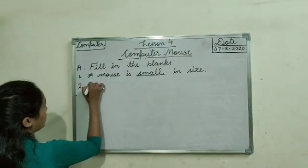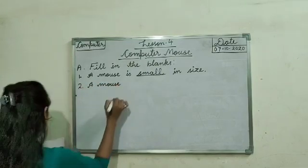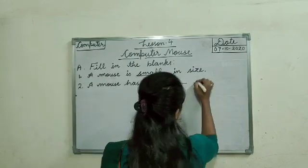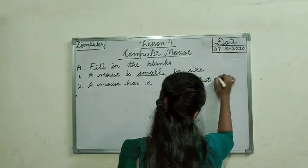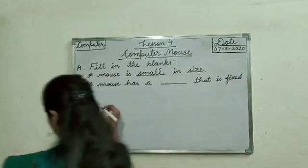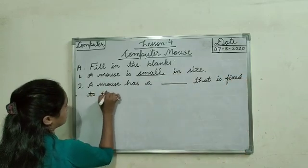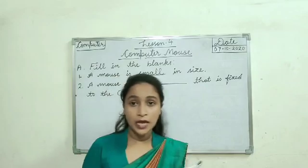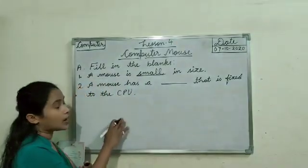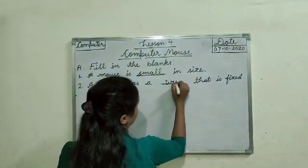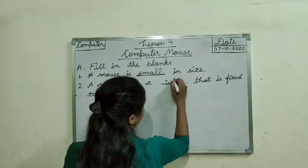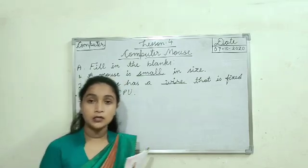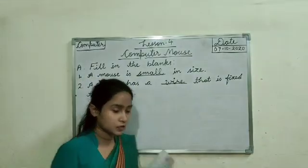Second: a mouse has a dash that is fixed to the CPU. So, what does a mouse have that is fixed to the CPU? A mouse has a wire. W-I-R-E, wire. Wire means a cord. A mouse has a wire that is fixed to the CPU.